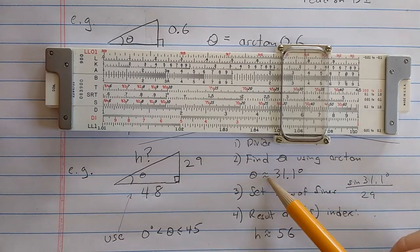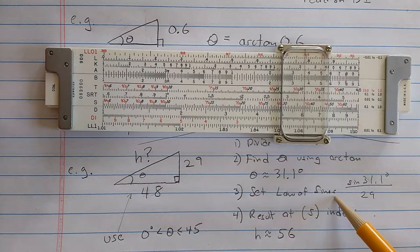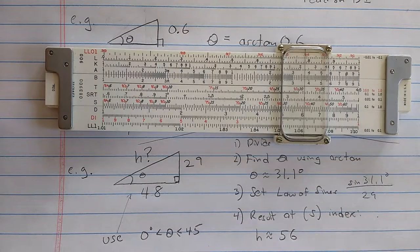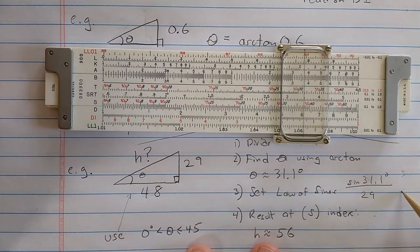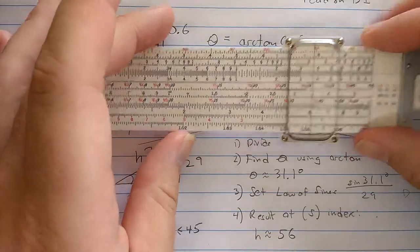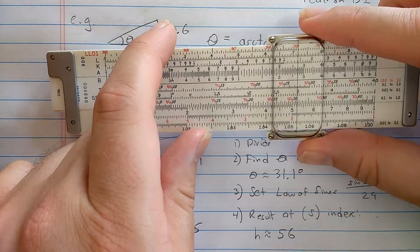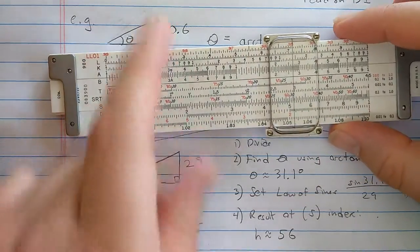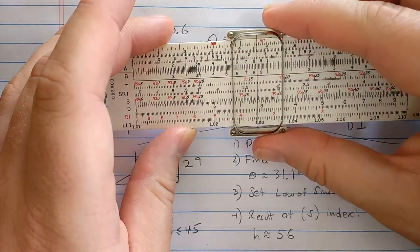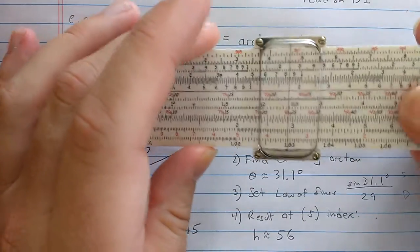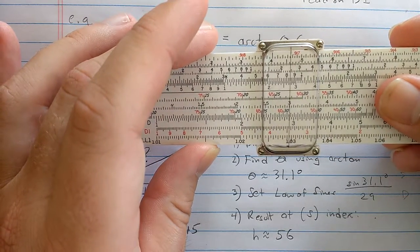So that's essentially found that angle. And I actually have to read that number off of the slide rule as 31.1. So here's a slide rule algorithm where I have to take that number and then do something with it. What I'm going to do with it is use the law of sines. This is a trick from the law of sines video. So I'm going to set 31.1 on the S scale and 29 on the D scale to use the law of sines.